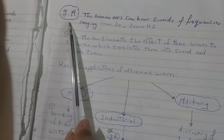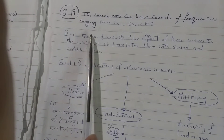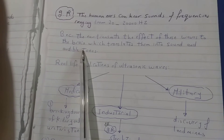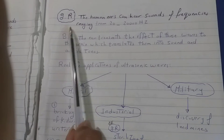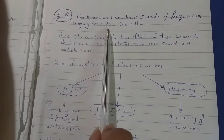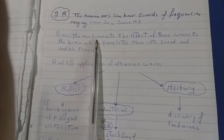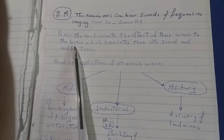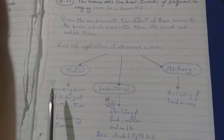Why can we hear sonic waves? Because our brain can transmit sonic waves into audible sounds or audible tones. So if we ask: give a reason why the human ears can hear sounds of frequencies ranging from 20 to 20,000 hertz — it is because the ear transmits the effect of these waves to the brain, which translates them into sound and audible tones.